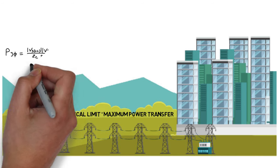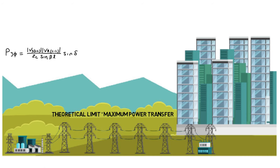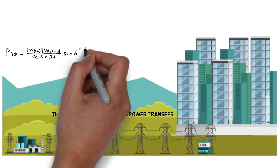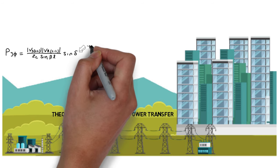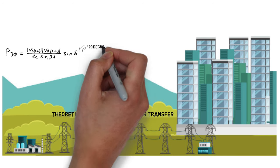The real power transfer over the transmission line is given by the theoretical limit. The maximum power that can be transmitted in steady state without compromising the stability of the line occurs when the angular displacement is equal to 90 degrees.